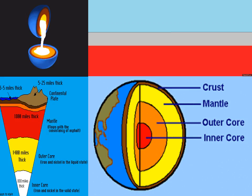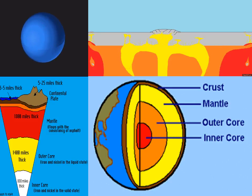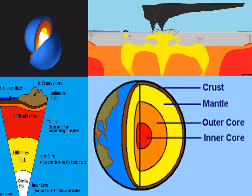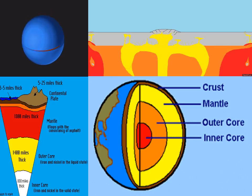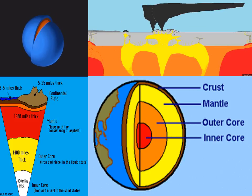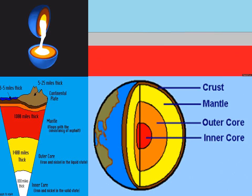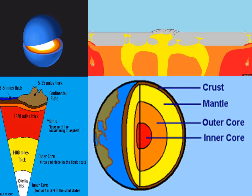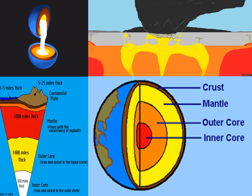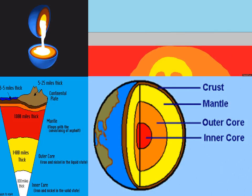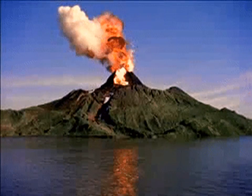Next layer is the mantle. The mantle is a very thick layer and is made up of dense and heavy materials such as oxygen, iron and magnesium. The temperature over here is very hot and hot rocks form magma in this layer. If cracks appear in the crust,